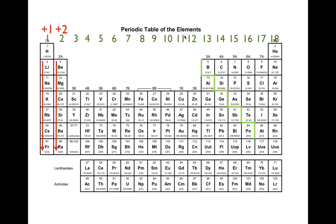We're going to skip over to group 13 and talk about aluminum down, because boron is not a metal. From aluminum down, they have three electrons in their outermost shell. When they form ionic bonds, they like to lose those three electrons, and therefore they become positively charged with a +3 charge. You lose three negatives, you become positively charged with a +3 charge.